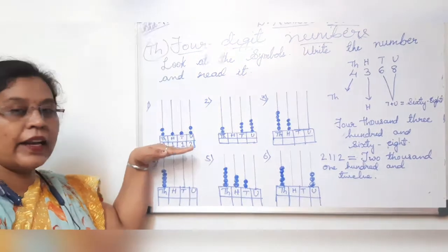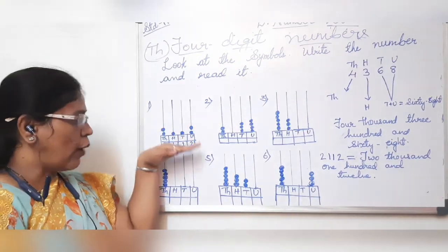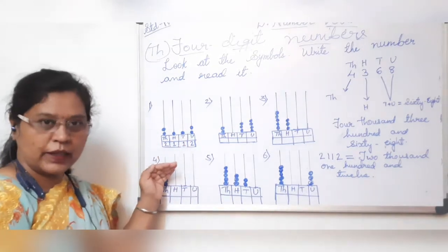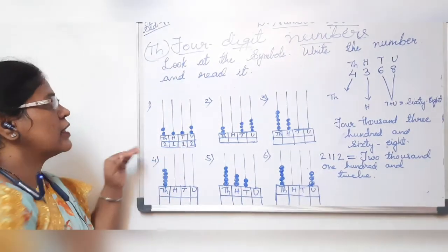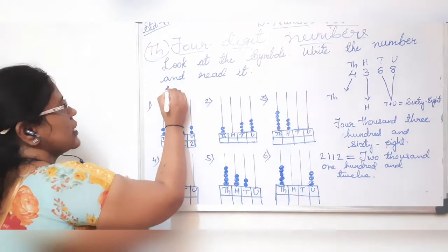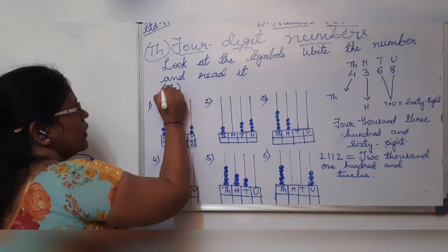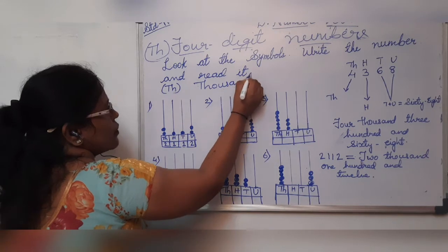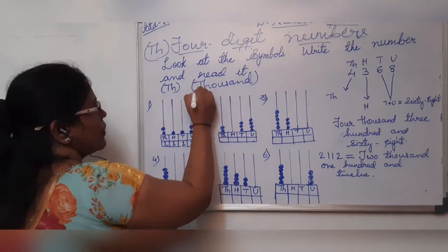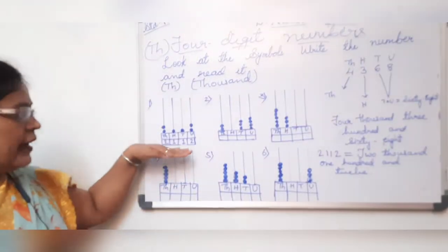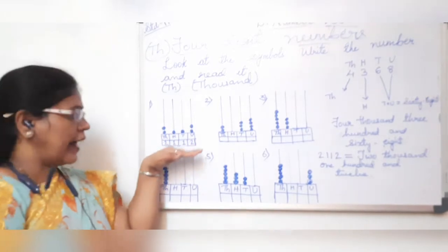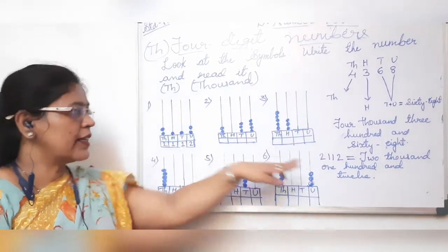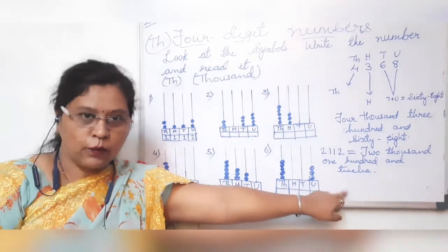Here we are counting the beads and writing the place values of the numbers — four-digit numbers. So four-digit number means thousand. The short form is TH. And counting the beads, writing the numbers, naming the numbers, and writing the numbers in words. With one sum we are doing four things.